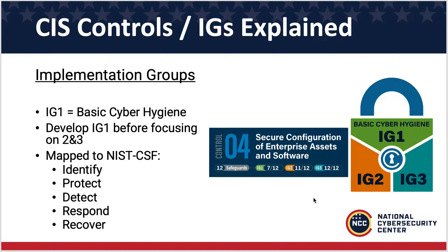Quick talk on the controls and implementation groups. The way that CIS breaks down their controls is into safeguards. Those safeguards are put into buckets based on their priority in terms of how you should go about implementing different controls. Implementation group one is what they consider basic cyber hygiene, so you tackle those first, then move to two, then move to three. In the most simplistic way of putting it, one is beginner and three is advanced.